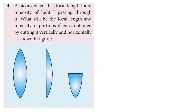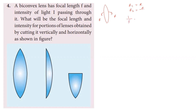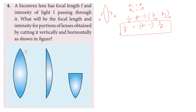A bi-convex lens has focal length f and intensity of light I. What will be the focal length and intensity for the portions obtained by cutting it vertically and horizontally? For an equi-convex lens, the formula is: 1 by f equals mu minus 1, into 2 by R. This is the equi-convex lens formula.